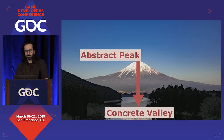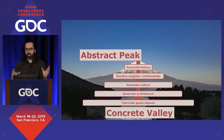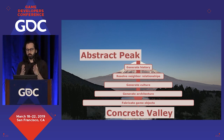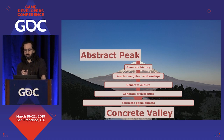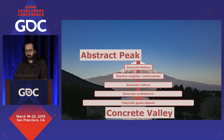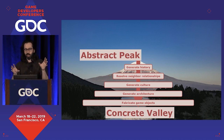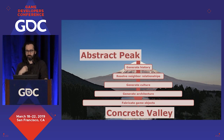Back to Abstraction Mountain. We have five steps arranged along an axis of abstraction. We start really abstractly with village history, then resolve some neighbor relationships, then generate culture — getting closer and closer to Concrete Valley where we actually serve the village to the player. We can represent history pretty abstractly because players only engage with it by walking through the village, looking at monuments, and talking to NPCs. When we get to fabricating game objects we need to generate concrete things the player can interact with.